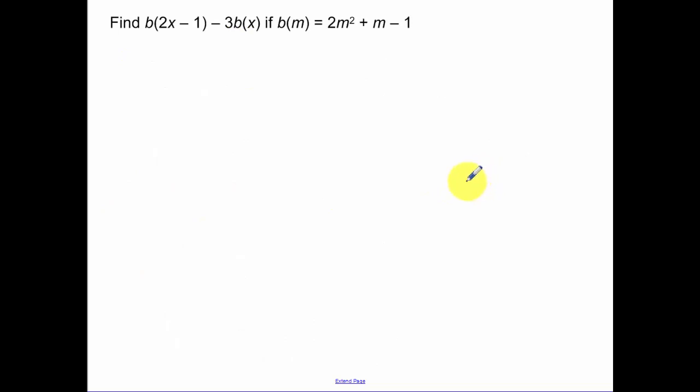Our next piece, just doing some algebra with this. So this first piece, what you're going to do is you're going to plug in 2x minus 1 everywhere you see an m in your polynomial. So I have 2m, which is 2x minus 1, squared, plus m, which is 2x minus 1, minus 1. Now the minus 3b of x, minus 3, times your function evaluated at x, which is just basically 2x squared plus x minus 1.